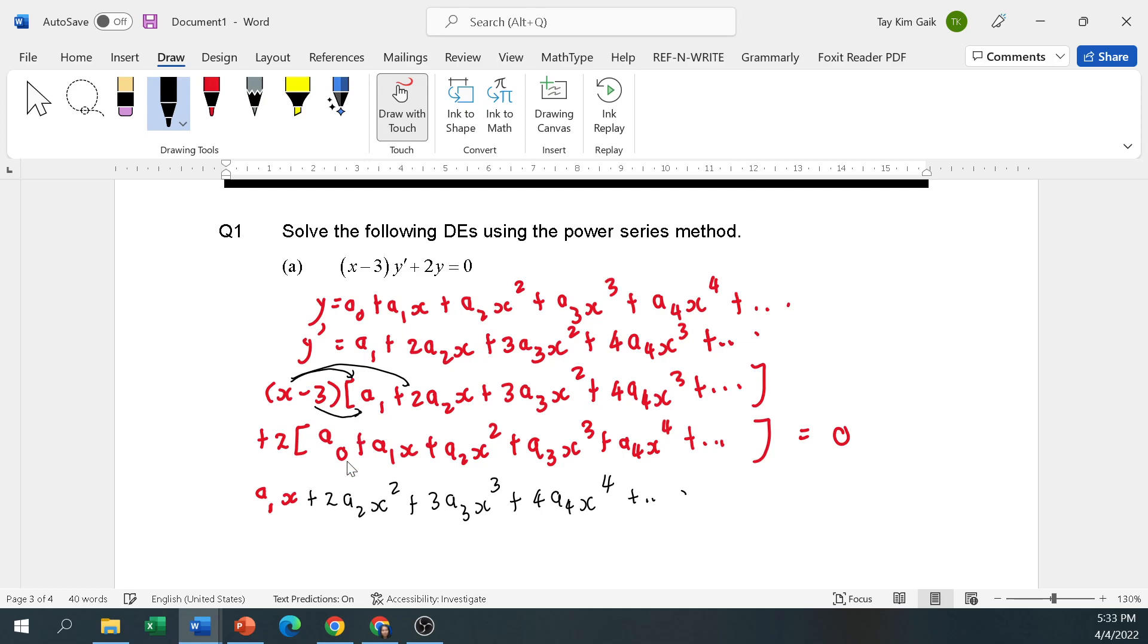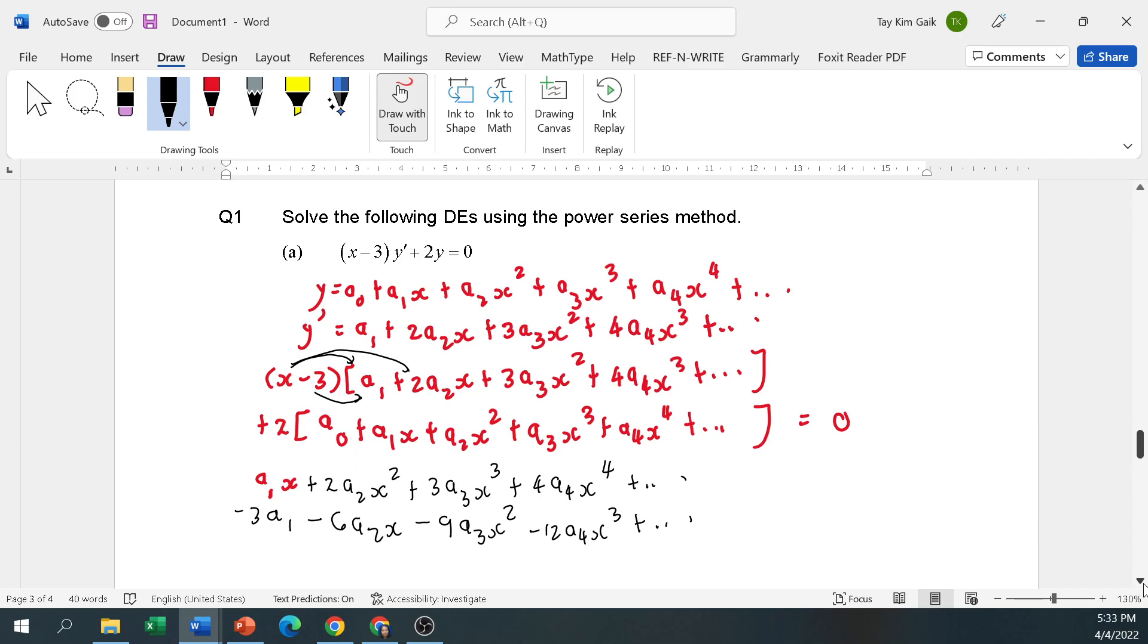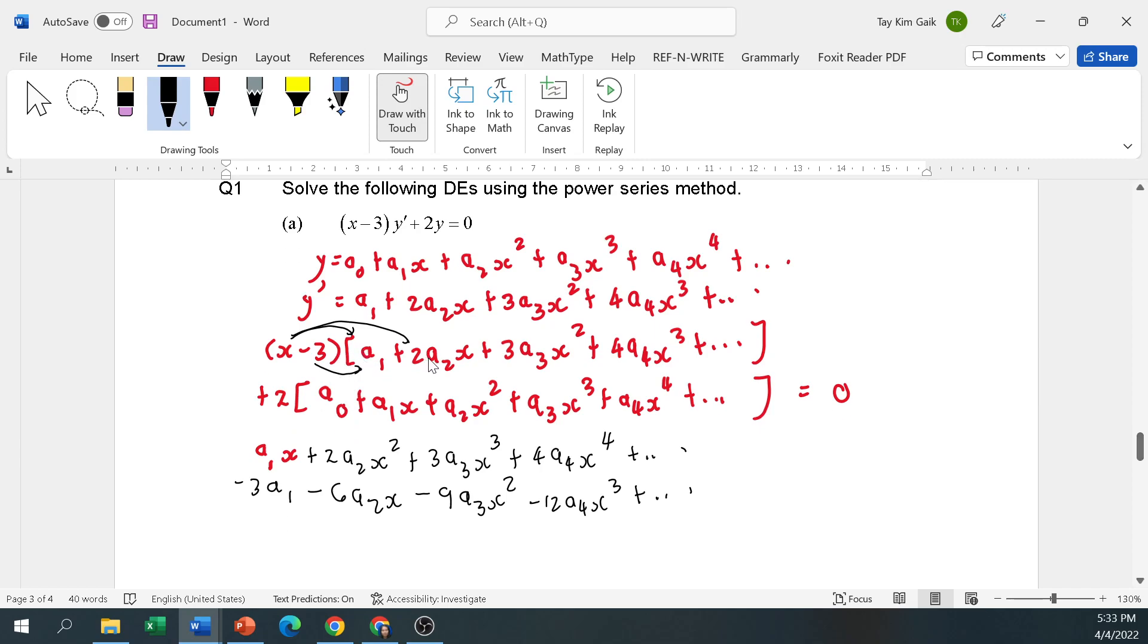So a1x plus 2a2x squared plus 3a3x cubed plus 4a4x to the power 4 minus 3a1 minus 6a2x minus 9a3x squared minus 12a4x cubed.